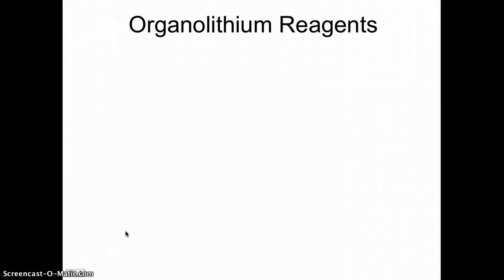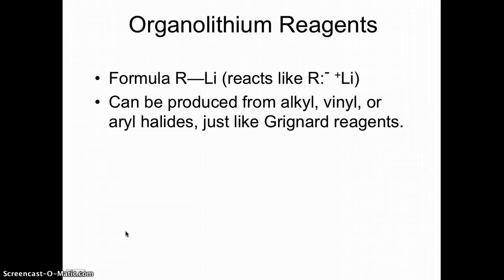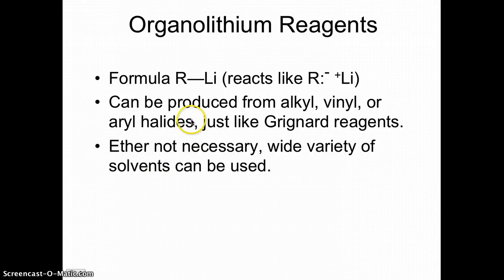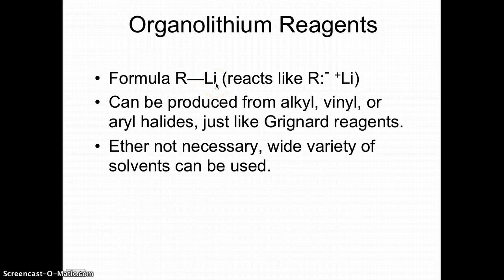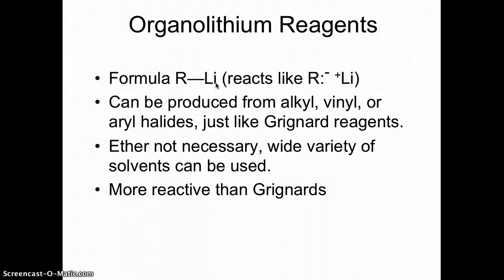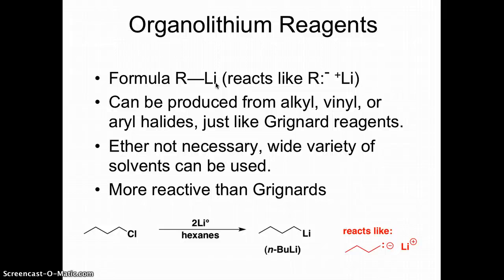Another type of organometallic reagent is an organolithium reagent. It reacts in the same way — we have an electronegativity difference between carbon and lithium, so it's a carbanion. The big difference is that an organolithium reagent is a lot more reactive, meaning the electronegativity difference between carbon and lithium is greater. We usually use a nonpolar solvent like hexanes instead of ether. Starting from an alkyl halide and adding lithium metal in a nonpolar solvent, we can make n-butyllithium.